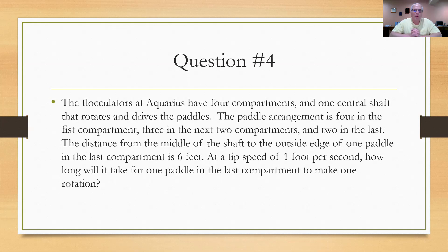It says that the flocculators at Aquarius have four compartments to them, and one central shaft that rotates and drives the paddles in the compartments. Paddle arrangement is that there are four in the first compartment, three in the second compartment, three in the third compartment, and finally two in the last compartment. So since you have one shaft rotating and driving these paddles, obviously there'd be roughly twice as much energy going to the first compartment than there would be in the last compartment. The distance of the middle of the shaft to the outside edge of one paddle is six feet. So they're giving you a radius of a circle.